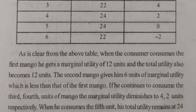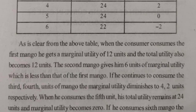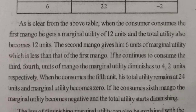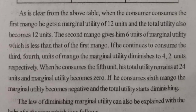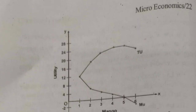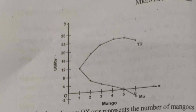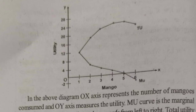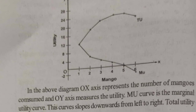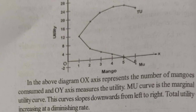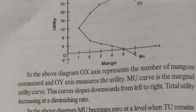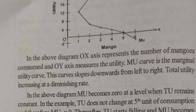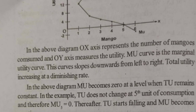When the consumer goes on consuming a particular product without any time gap — for example, eating four apples without stopping and then adding one more — the satisfaction decreases. The first apple gives good satisfaction, but eventually marginal utility becomes negative. That is the Law of Diminishing Marginal Utility. You must memorize the table and diagram for this law.